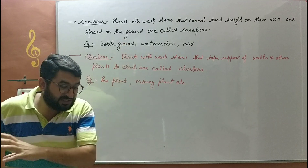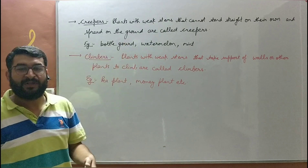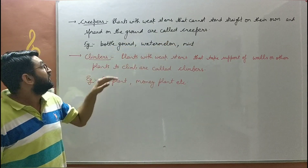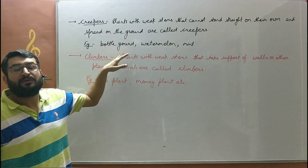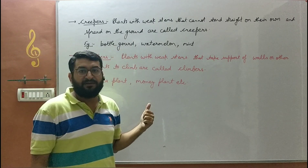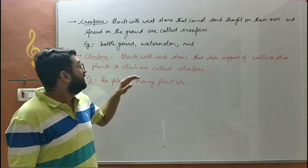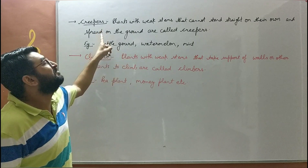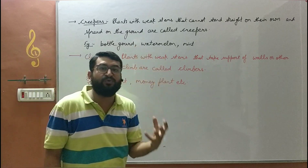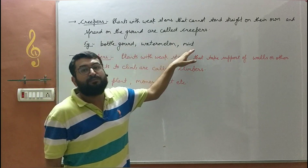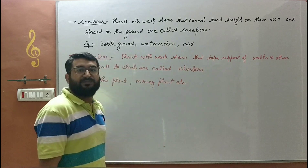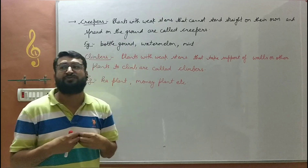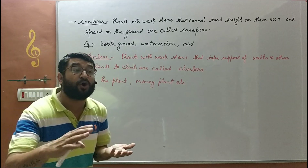Examples of creepers include bottle gourd (lauki), pumpkin, bitter gourd (karela), watermelon, and mint. These plants usually lie on the ground because they do not have a very strong stem.